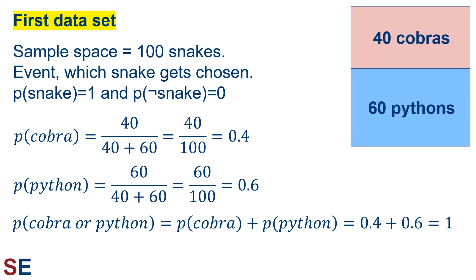Okay, let's look at our first data set. We'll be thinking about a sample space of 100 snakes as represented by the boxes. Of the 100, 40 will be cobras and 60 will be pythons. The events we're thinking about are choosing individuals out of the sample space, and we'll be thinking about which species of snake gets chosen.